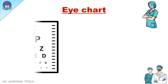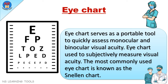Eye chart. An eye chart serves as a portable tool to quickly assess monocular and binocular visual acuity. It is used to subjectively measure visual acuity. The most commonly used eye chart is known as the Snellen chart.